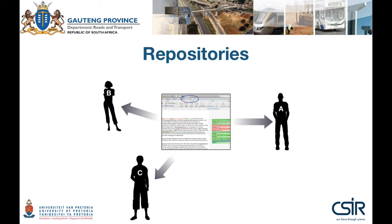Track changes works well if the document passes sequentially from one to another, but as soon as people start working simultaneously on a document it can become quite messy. Secondly, although track changes is a form of revision control it only works with Microsoft Word documents, and in MatSim we want to change and manage our data too, such as the population and network files.